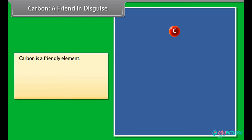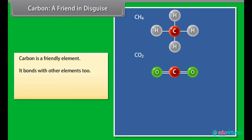A friend in disguise. Carbon is a friendly element. It not only bonds with hydrogen but also with other elements such as halogens, oxygen, nitrogen, and sulfur. The compounds are formed in the same manner as with hydrogen.